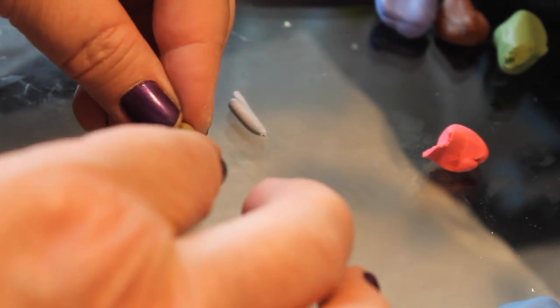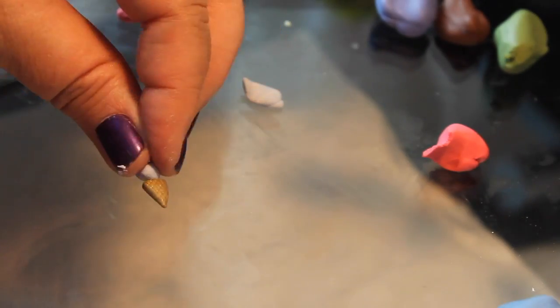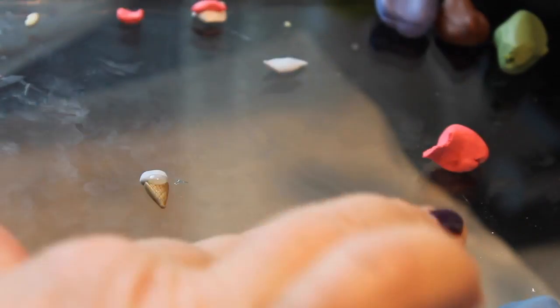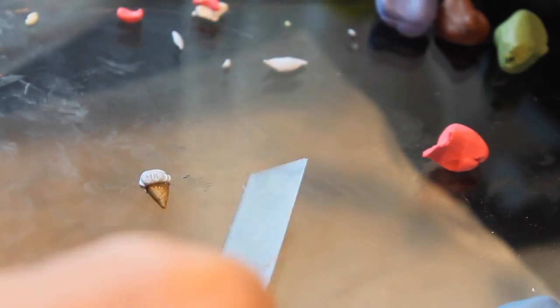And since that turned out pretty good, I'm going to go ahead and make another one. This one will be a single scoop. Same process. This one though, it's going to have a blue scoop. And these are pretty easy to make. And they turn out pretty cute.